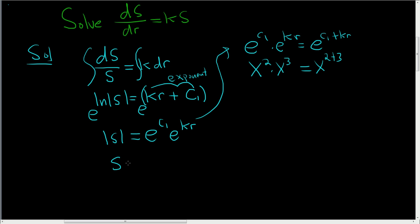Alright, we have to drop the absolute value. Whenever you do that, you get a plus or a minus. So plus or minus e to the c1 e to the kr.